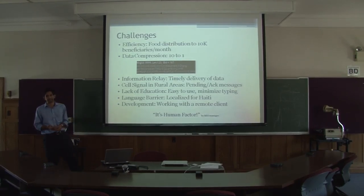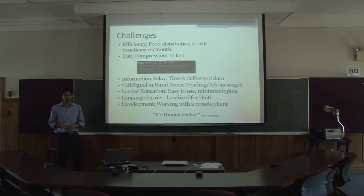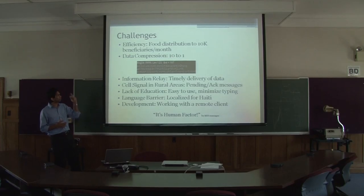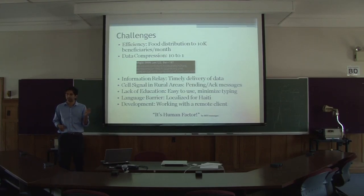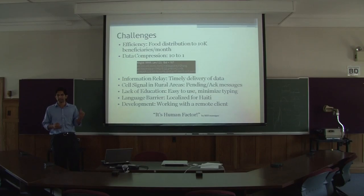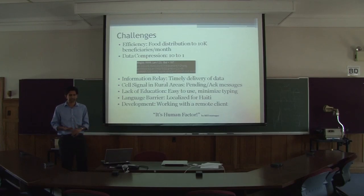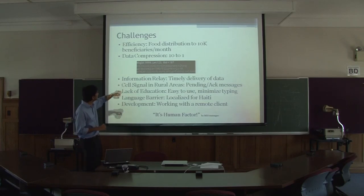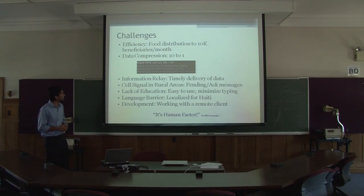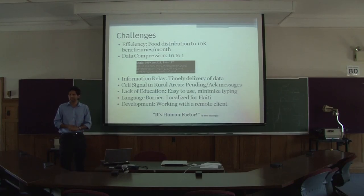You also want to reduce the number of text messages sent back and forth to keep costs down, since you may be paying per message. The registration form is about a two-page document covering name, date of birth, children's names, alternate collector ID, and aid status. All that information needs to be compressed into a text message. We did some rough studies and achieved a compression ratio of about 10 to 1 on the registration form.